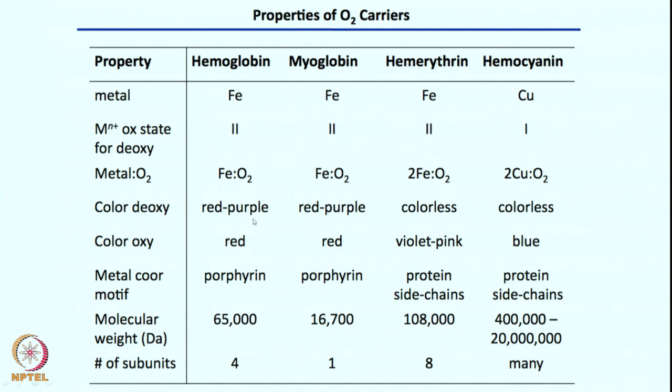It is just the O2 molecule that gets delivered, but you must understand that these are not just iron-oxygen binding events — electron transfer is happening during these processes. For hemoglobin and myoglobin, upon oxygen binding the color becomes red-purple. For hemerythrin it is colorless in the deoxy form, and upon oxygen binding it becomes red-violet-pink. For hemocyanin it becomes blue.